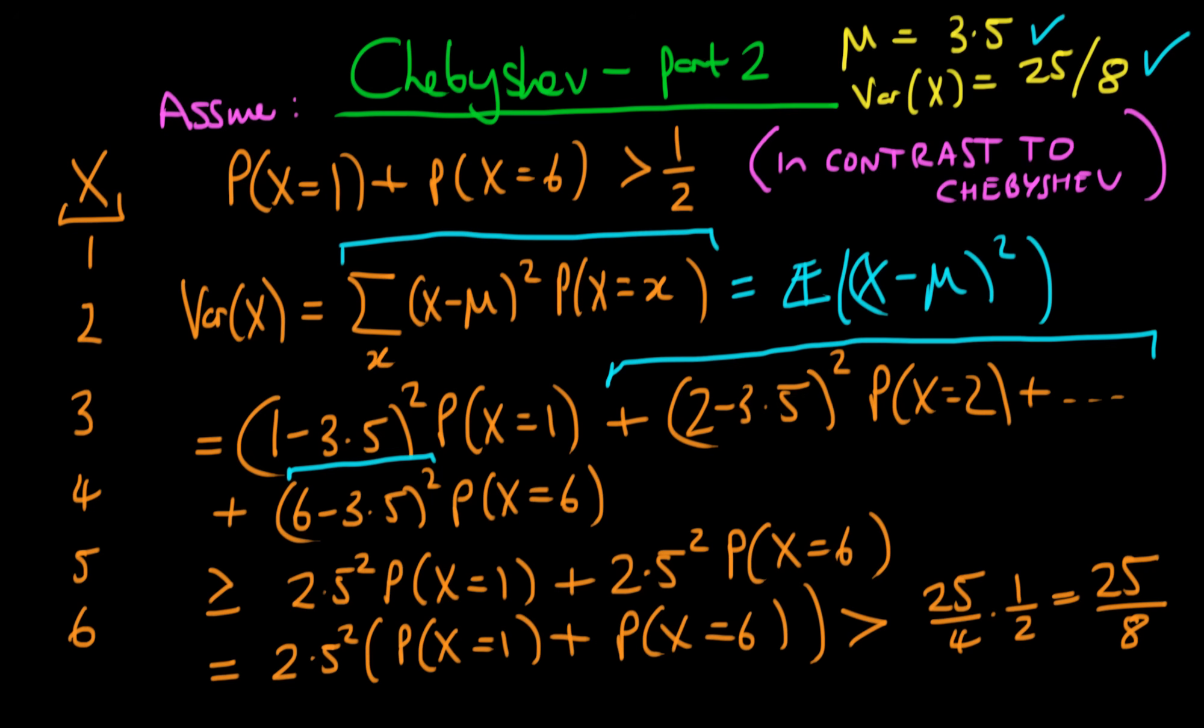And notice that we've got a contradiction here. We originally assumed that the variance of x was actually equal to 25 over 8, whereas now we've actually proved that if we assume the opposite of Chebyshev, we have a variance which is greater than 25 over 8.